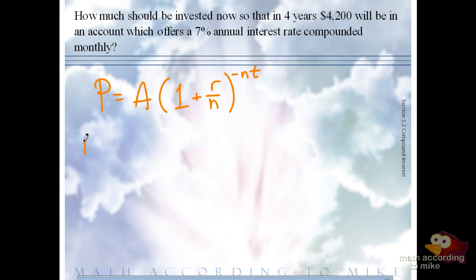What's our A? 4200. Good. What's our R? 0.07. Good. N? 12. Four. Very good. So, what's that exponent then? 48. Very good.